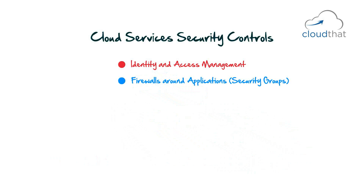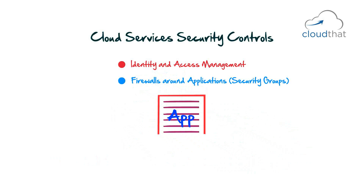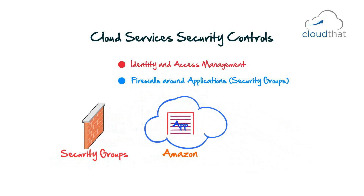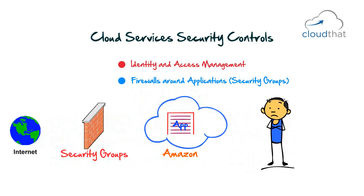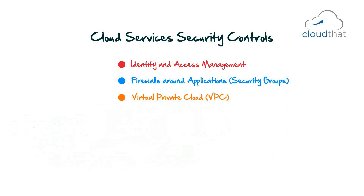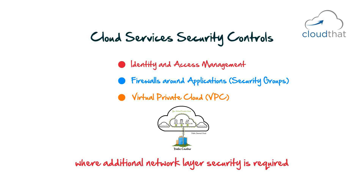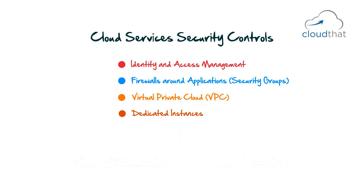Firewalls around applications — in Amazon cloud these are called security groups — block all incoming traffic. Users should decide which ports are open to computers or the internet and configure security groups accordingly. Virtual Private Cloud (VPC) simulates a private network as isolated infrastructure inside a public cloud, and can be used where additional network layer security is required.